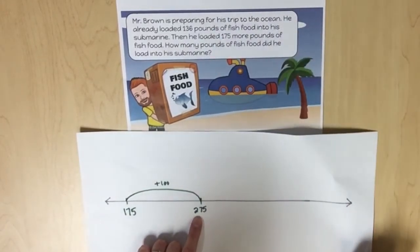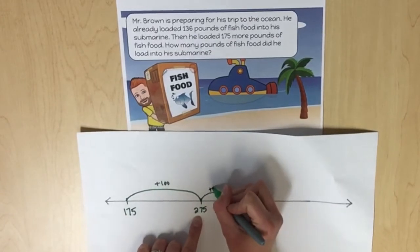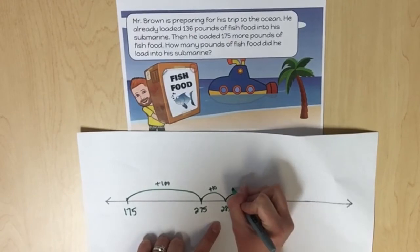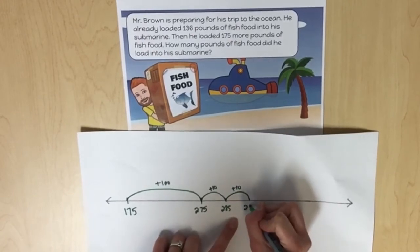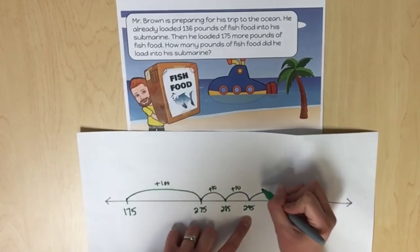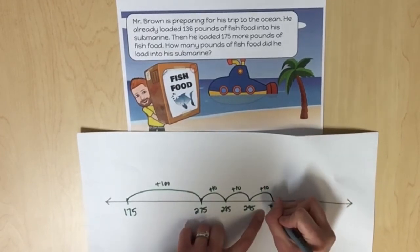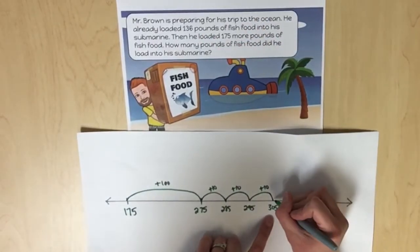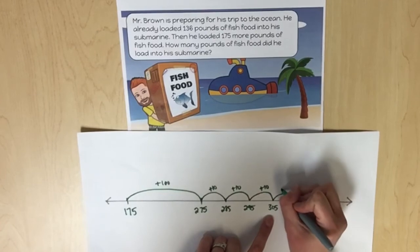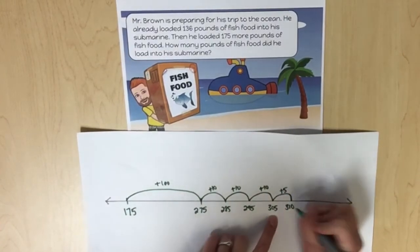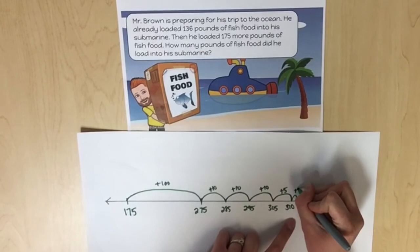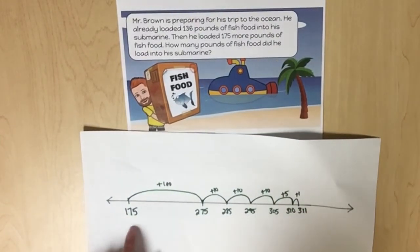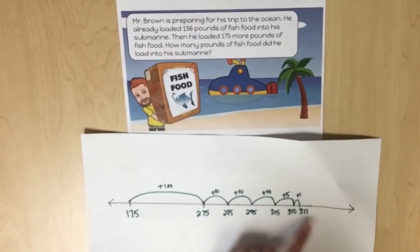Now I'm going to work with the 30: 10, 10 more, 10 more. I'm now at 305. I need to now add on 6 ones. I'm going to do 5. That gets me to 310 plus one more, 311. 175 plus 136 equals 311.